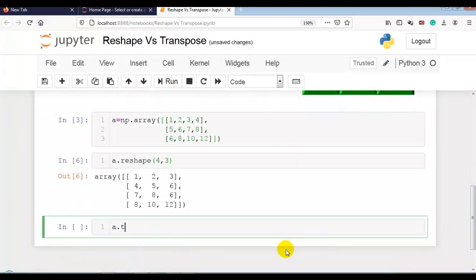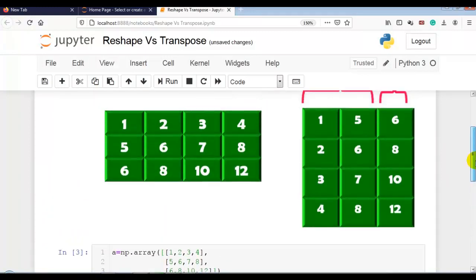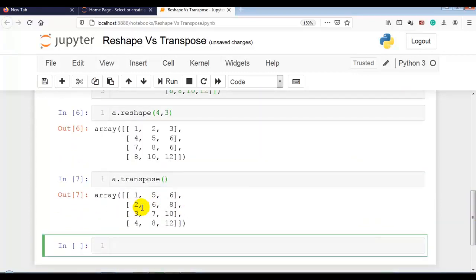Now let's do transpose. You can see it's converted as per our requirement: 1, 5, 6, 2, 6, 8, and so on. So 1, 5, 6, 2, 6, 8, 3, 7, 10 as we required.